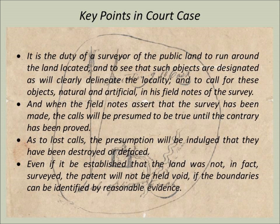Some of the key points taken from this decision that ultimately became law include: it is the duty of a surveyor of the public land to run around the land located and to see that such objects are designated as will clearly delineate the locality, and to call for these objects, natural and artificial, in his field notes of the survey. When the field notes assert that the survey has been made, the calls will be presumed to be true until the contrary has been proved.